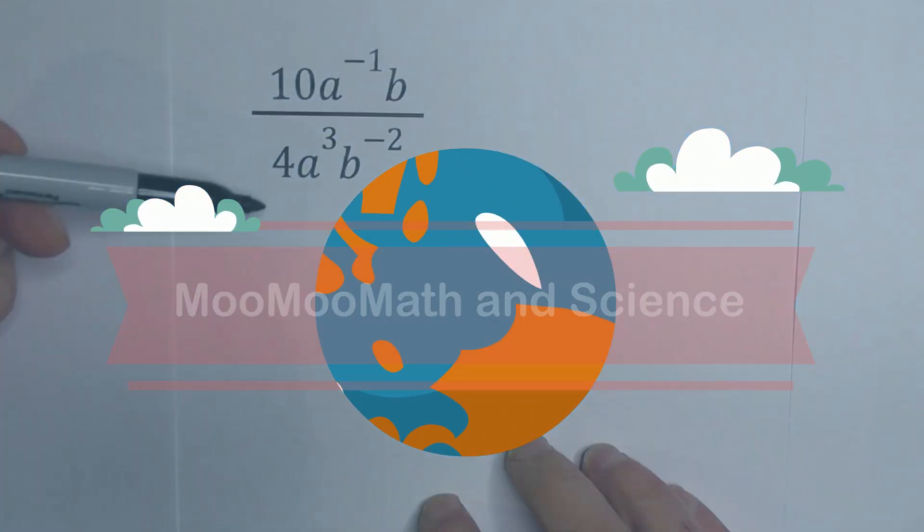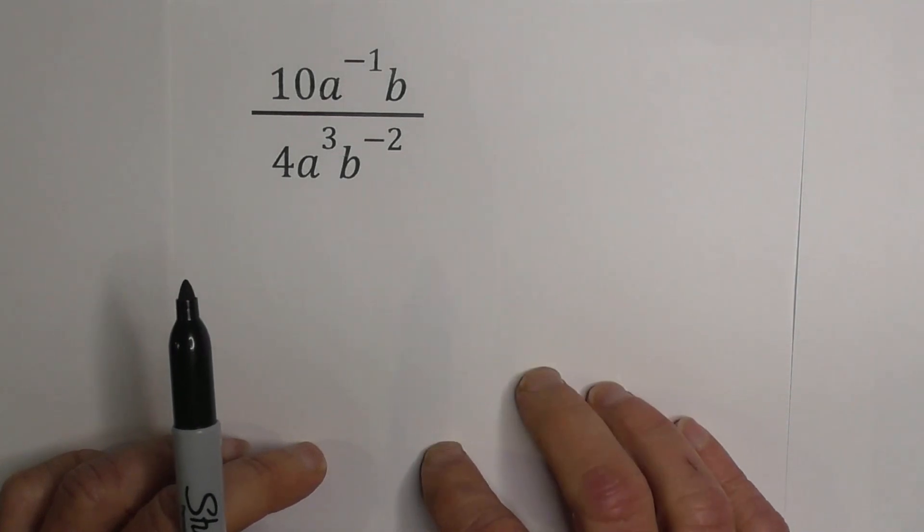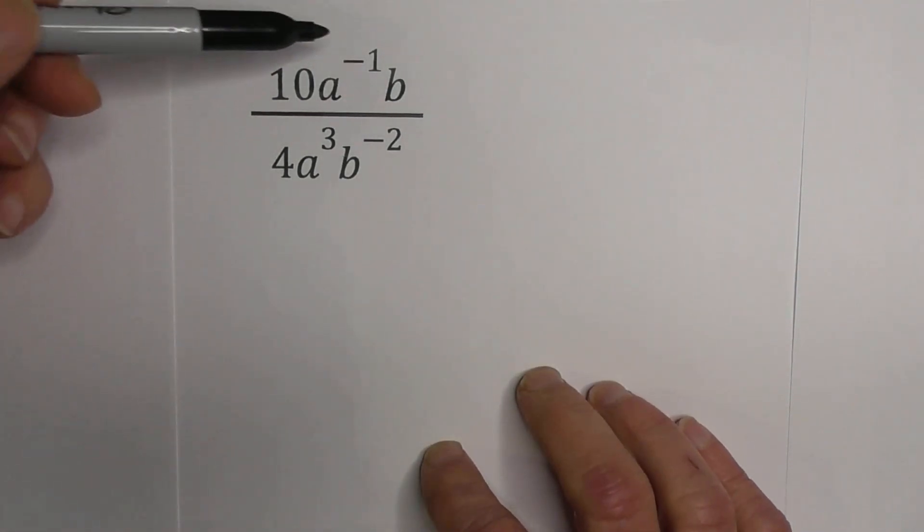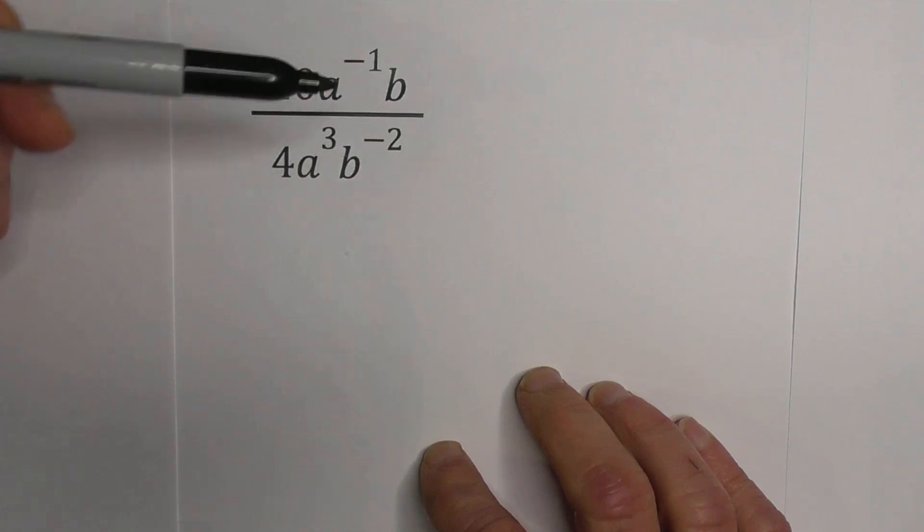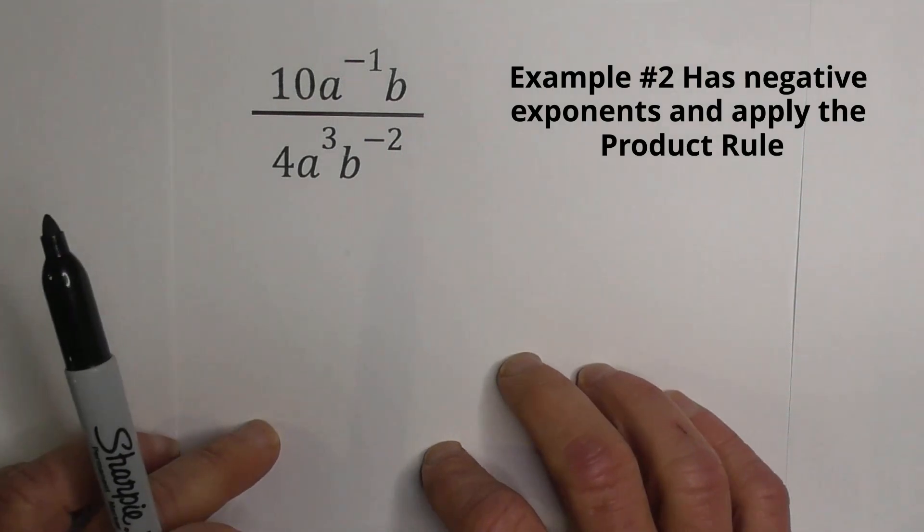How do we simplify this fraction that has negative exponents? Welcome to Moo Moo Math and Science. In this video, I'd like to simplify using negative exponents. And then we have another one where we're going to use the product rule in order to simplify this.